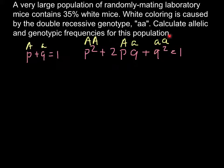We're told that 35% of the population is white mice, so we can set q² = 0.35. This is the frequency of the homozygous recessive. Now when we know this information, we can solve the whole formula and give all the answers.